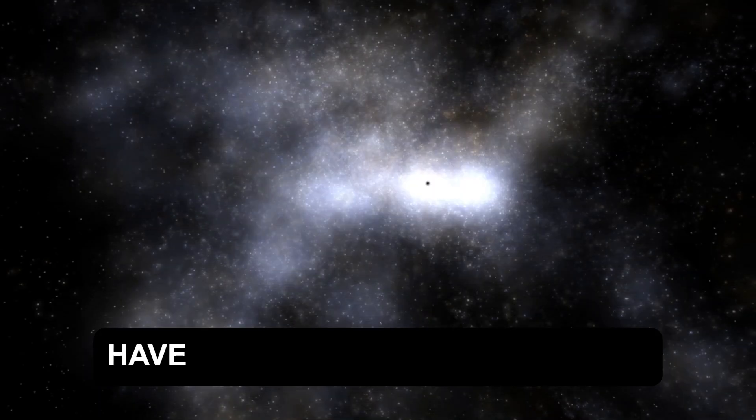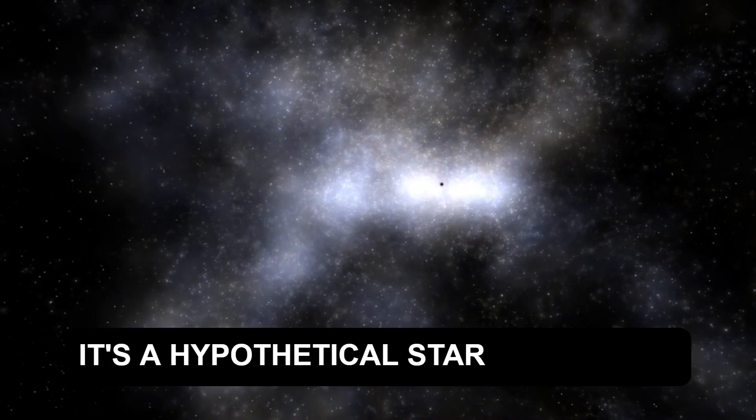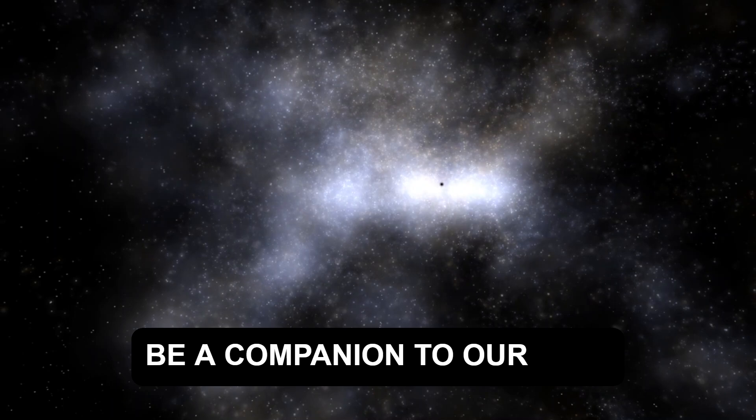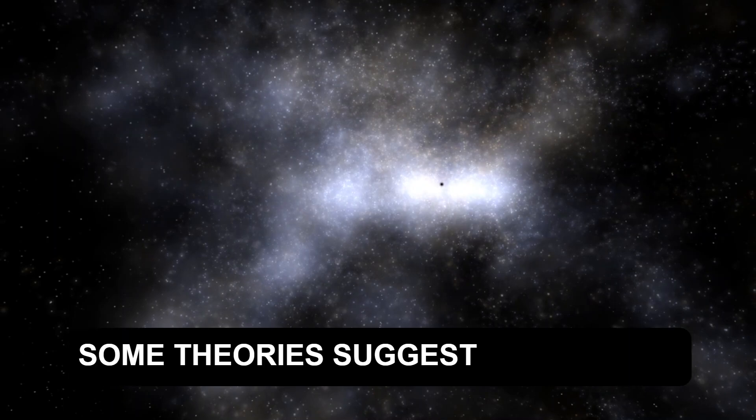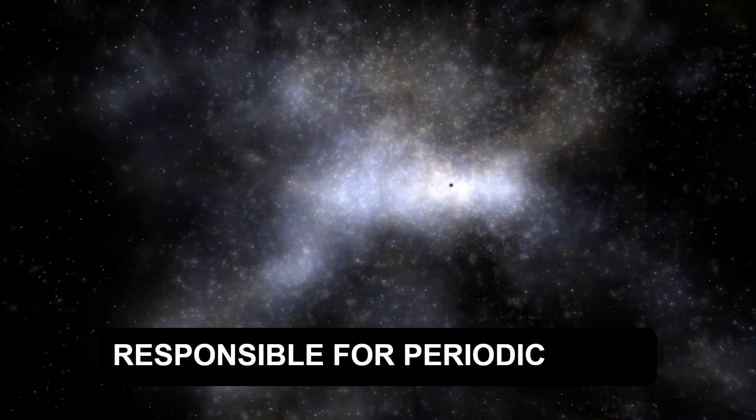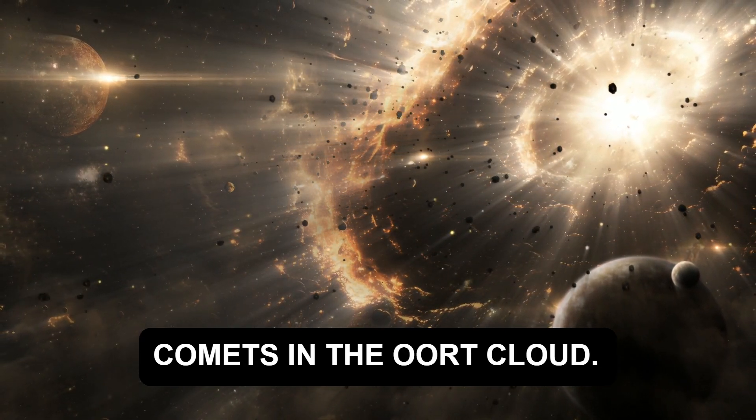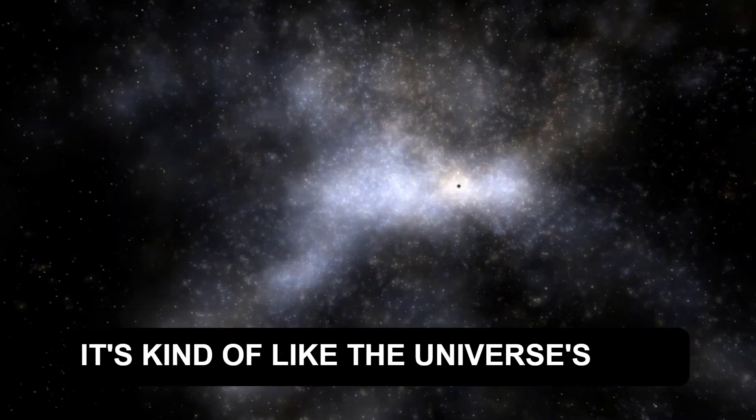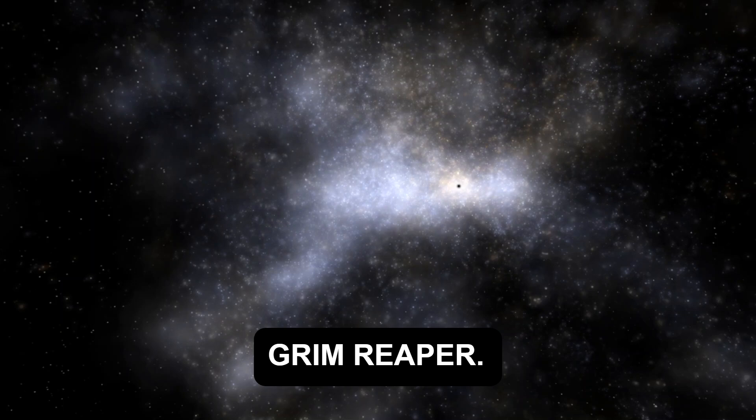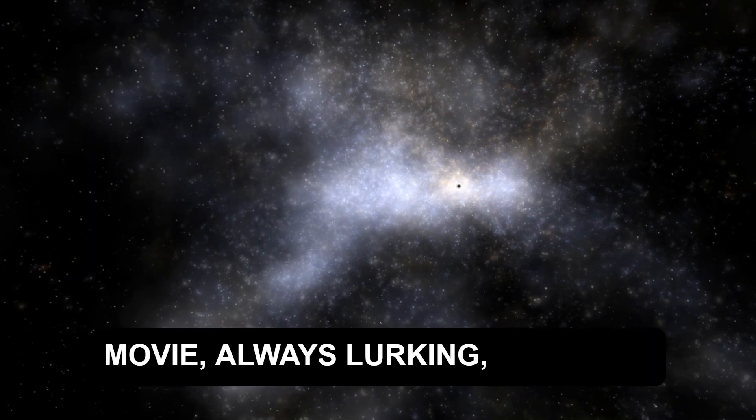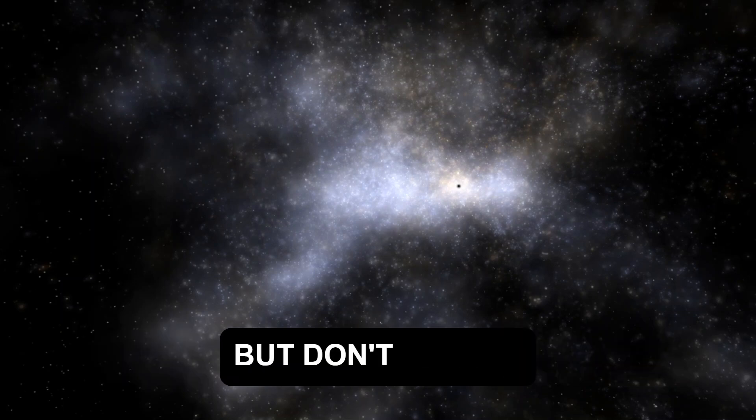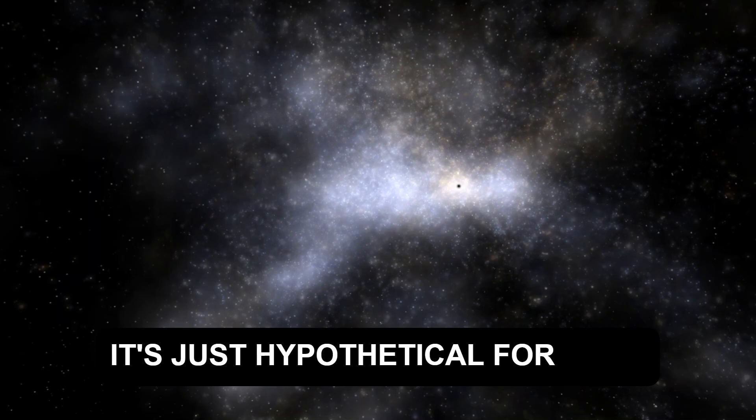And speaking of mysterious pulls, have you heard about Nemesis? It's a hypothetical star that might be a companion to our sun. Some theories suggest it could be responsible for periodic mass extinctions on Earth by disturbing comets in the Oort cloud. It's kind of like the universe's own Grim Reaper. Picture it like a guy in a disaster movie, always lurking, ready to cause chaos. But don't worry, it's just hypothetical for now.